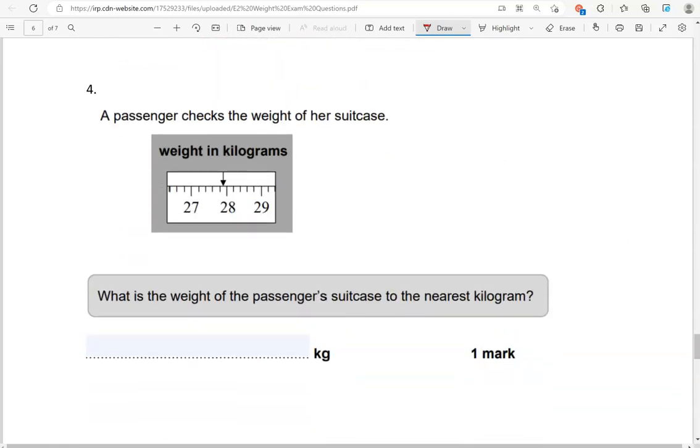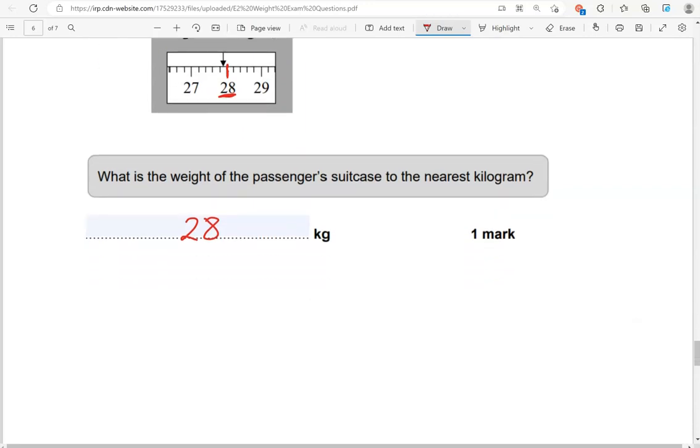The passenger checks the weight of her suitcase. What is the weight of the passenger's suitcase to the nearest kilogram? We've got weight in kilograms. We've got 27, 28, 29. This is so close to 28. We're going to say 28 kilograms because it's much closer to 28 than to 27 or 29.